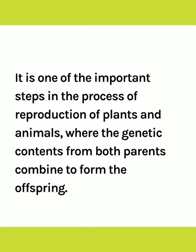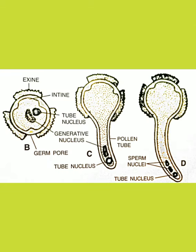It is one of the important steps in the process of reproduction of plants and animals, where the genetic content from both parents combine to form offspring. The mature pollen grain is a cell with a double wall. You can see in figure B the outer layer called exine and the inner one is entine. In the middle, its nucleus has already divided into a tube nucleus and a generative male nucleus. At this stage the pollen is transferred to the stigma, and after that only further changes occur in it.